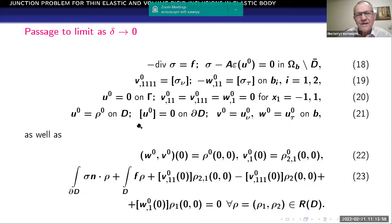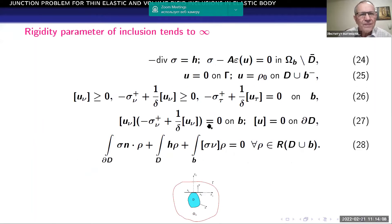So this is equilibrium equations in boundary condition, as well as junction conditions. I do not have time for comments. And also, it's possible to pass to the limit when rigidity parameter of thin inclusions tends to infinity and damage parameter is fixed.